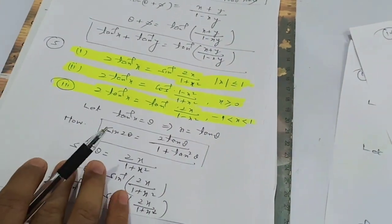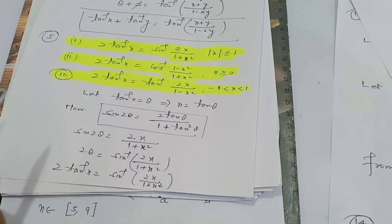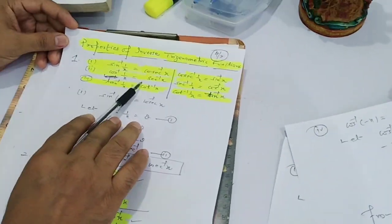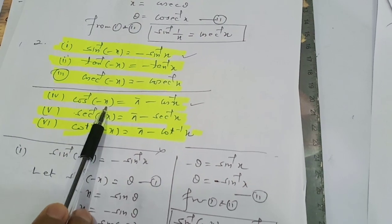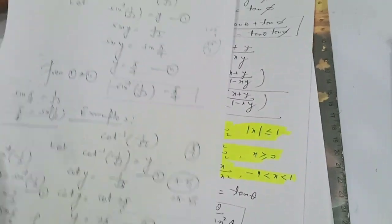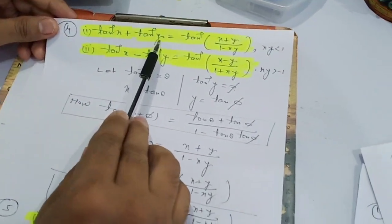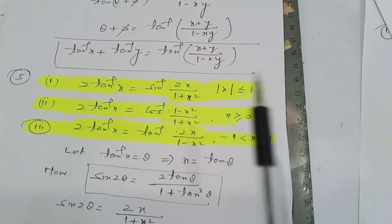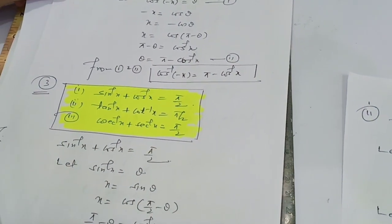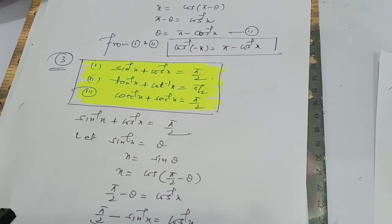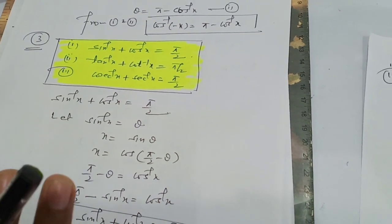So for today's class, your homework is to derive all of these properties the way I have demonstrated. I showed one part of each; you should practice all parts. To recap: Property 1 was the reciprocal relations like tan⁻¹(1/x) = cot⁻¹(x). Property 2 covered sin⁻¹(-x) = -sin⁻¹(x) and cos⁻¹(-x) = π - cos⁻¹(x). Properties 3, 4, and 5 followed. Learn all properties, verify them, and send your work to me. That's it for today's class.